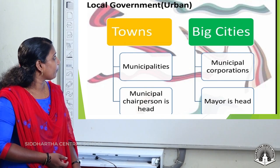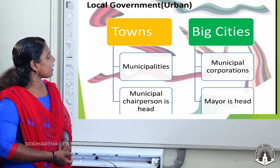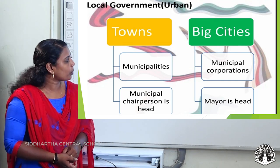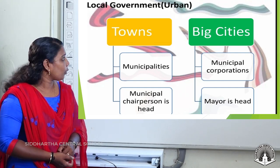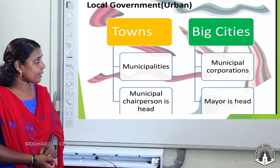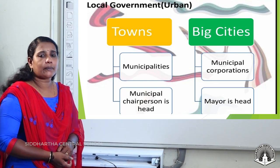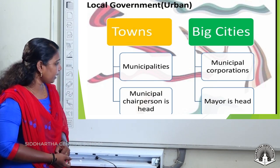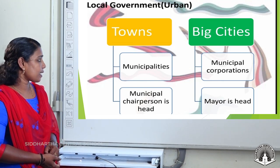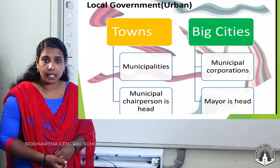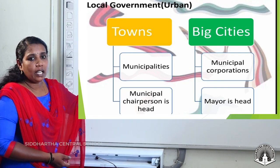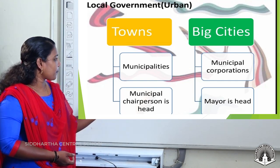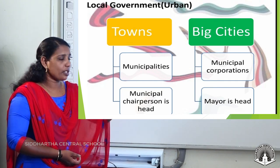Now, coming to the urban area — local government bodies exist in urban areas too. In towns, we can see them in the form of municipalities, and big cities have municipal corporations. The members of both these local government bodies are elected by the people. The head of the municipality is the Municipal Chairperson, and in a municipal corporation the head is the Mayor.